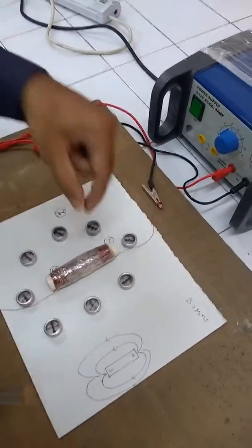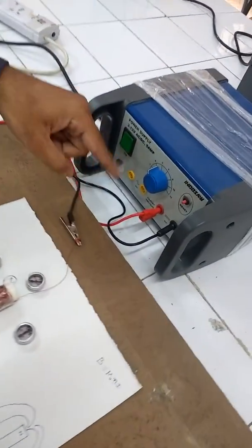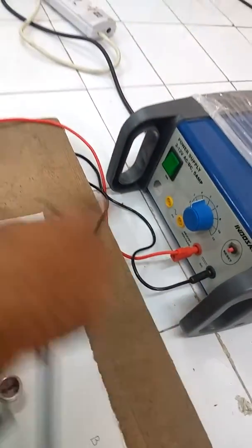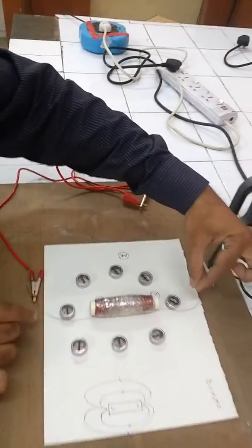So here this is a solenoid and the ends of the solenoid are connected to the two terminals of the battery, the positive terminal and the negative terminal. The connections are made.